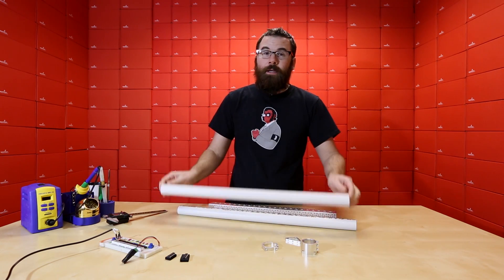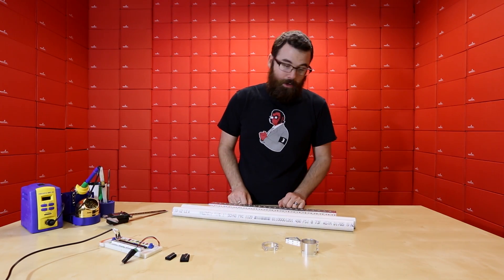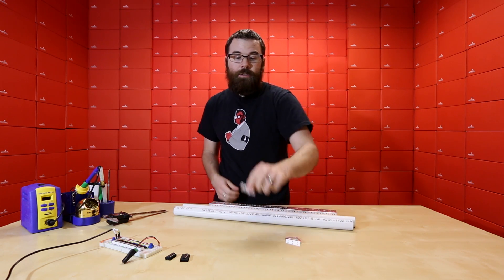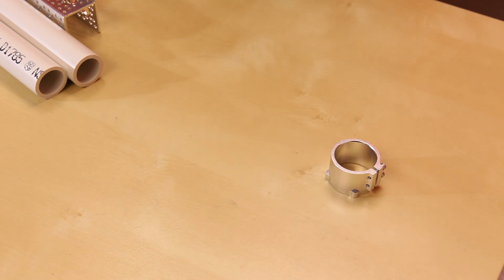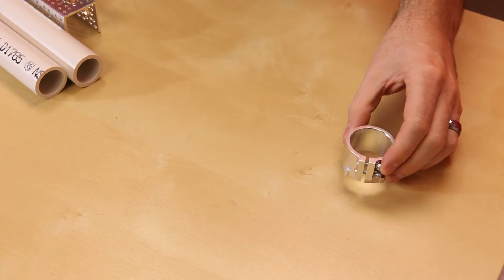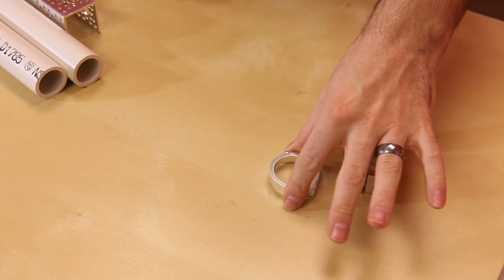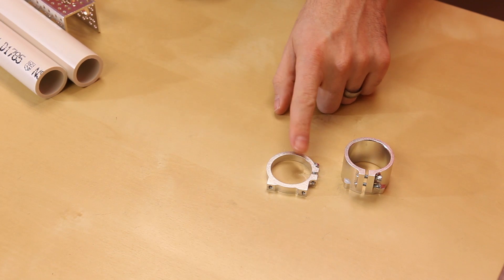You also might be wondering why we have lengths of PVC pipe here. Well these next two products actually allow you to use Actobotics with PVC pipes. We have the 1 inch PVC clamp hub and the 1 inch PVC clamp mount.